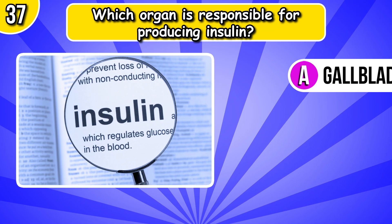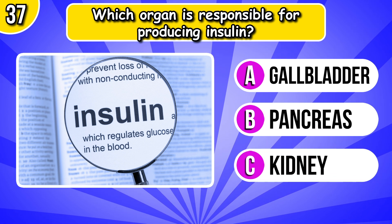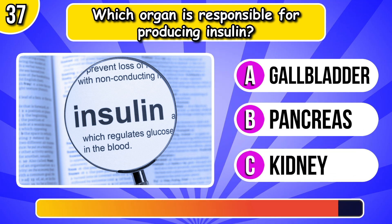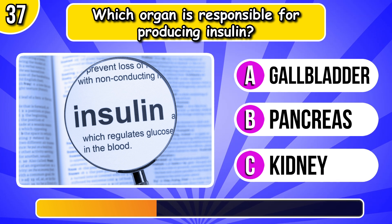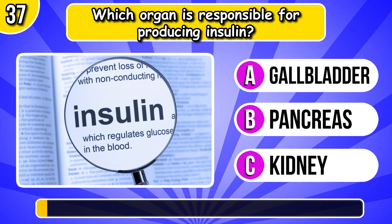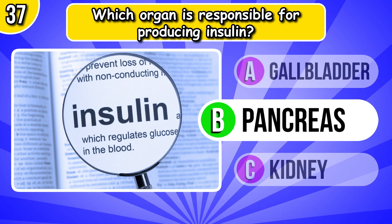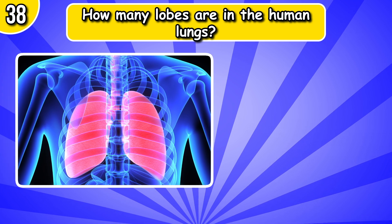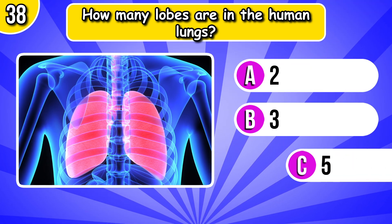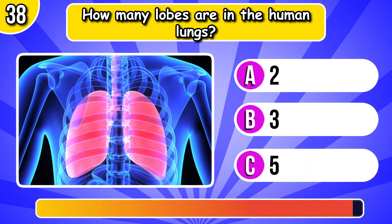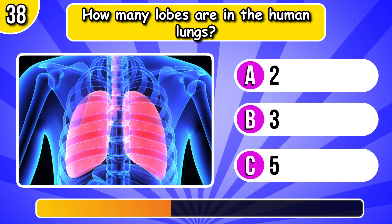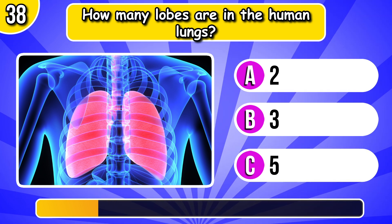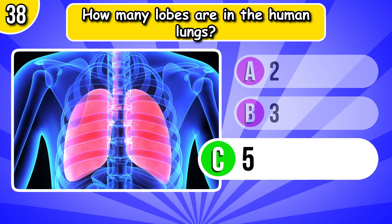Which organ is responsible for producing insulin? It's pancreas. How many lobes are in the human lungs? Answer C, 5 lobes.